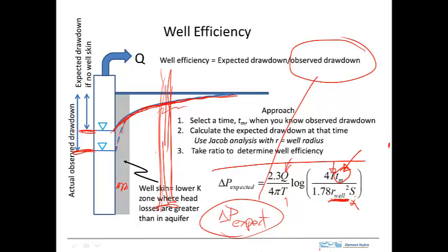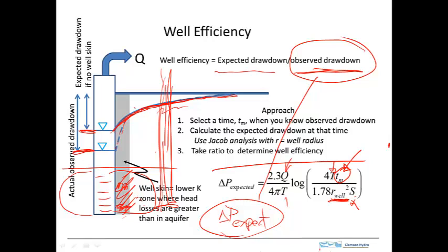Note that under some circumstances, the well efficiency can be greater than 1. In the common case shown, there's a low permeability region around the well, which often results from drilling or bacterial fouling. But it's also possible the well has a higher permeability region around it — for example, if the well has been hydraulically fractured or intersects a higher permeability zone. In that case, the expected drawdown might be greater than the observed drawdown, and the gradient near the well is less than expected.